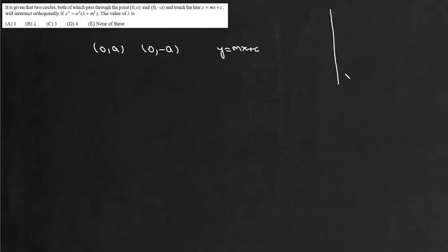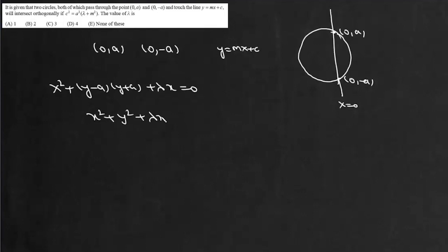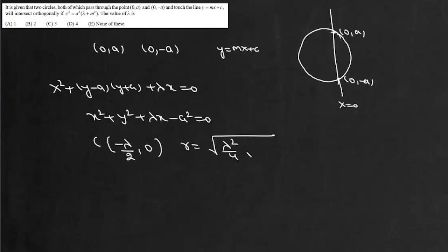Both fixed points lie on the y-axis: (0, a) and (0, -a), and the equation of the y-axis is x = 0. The family of all circles passing through these two fixed points is given by x² + (y - a)(y + a) + λx = 0, which simplifies to x² + y² + λx - a² = 0. The center of this circle is at (-λ/2, 0) and its radius is √(λ²/4 + a²).